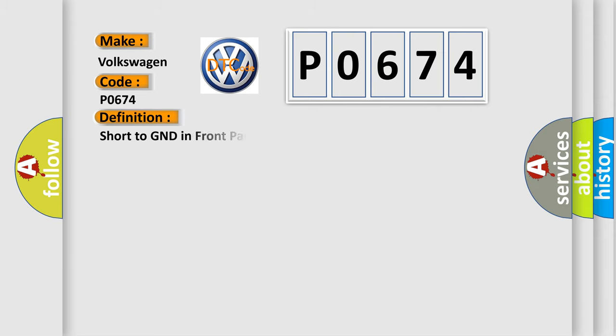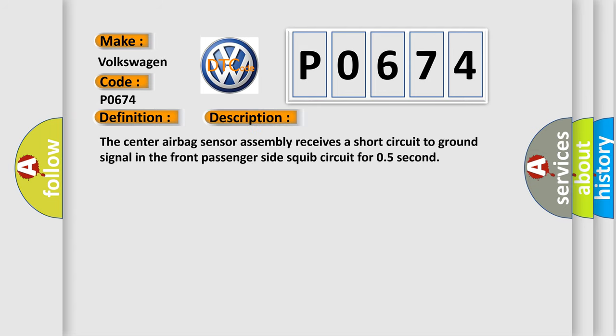The basic definition is: short to GND in front passenger side squib circuit. And now this is a short description of this DTC code. The center airbag sensor assembly receives a short circuit to GND signal in the front passenger side squib circuit for 0.5 second.